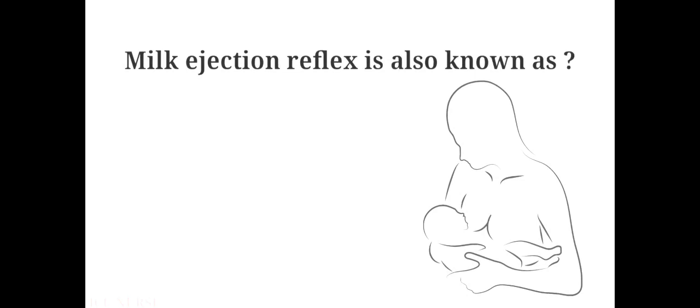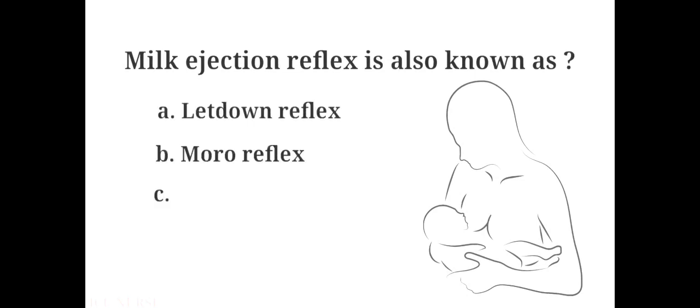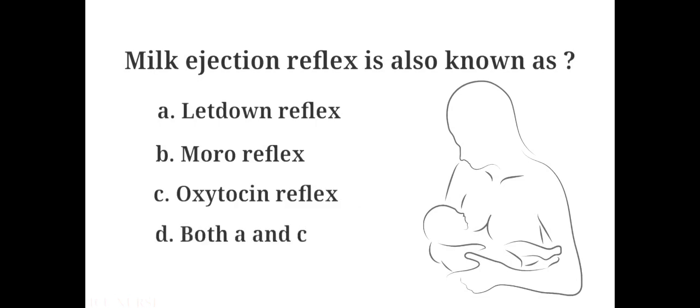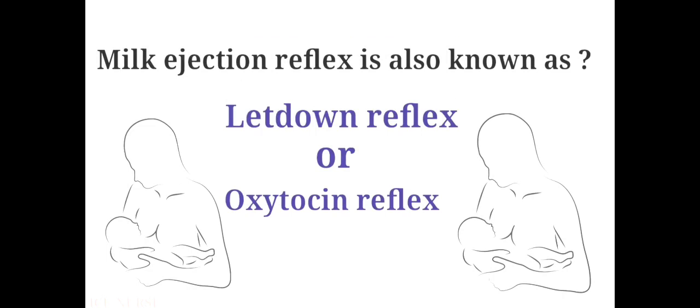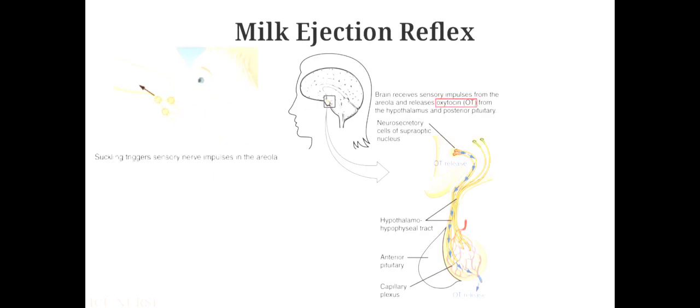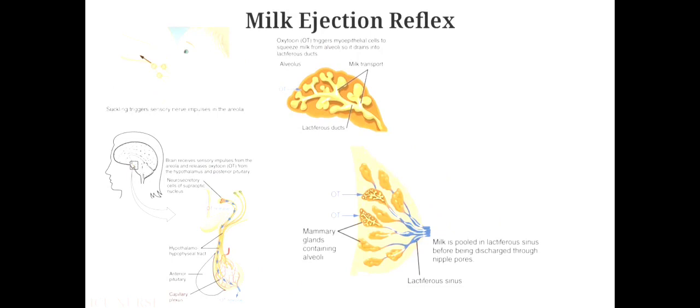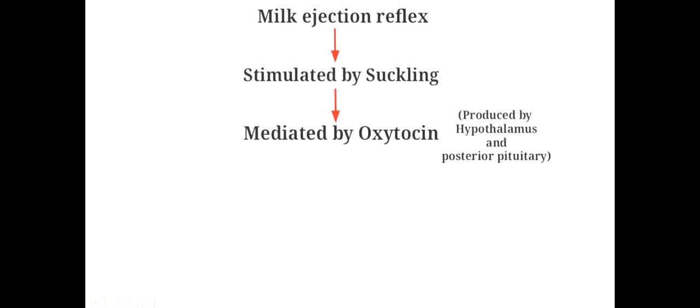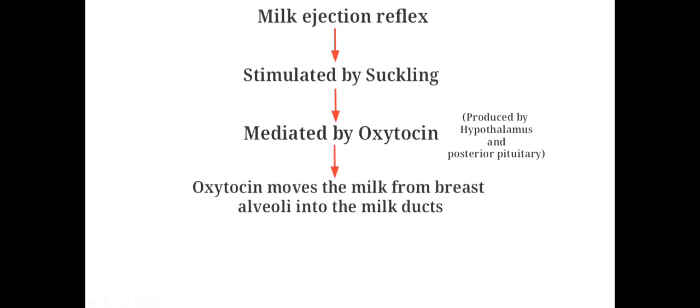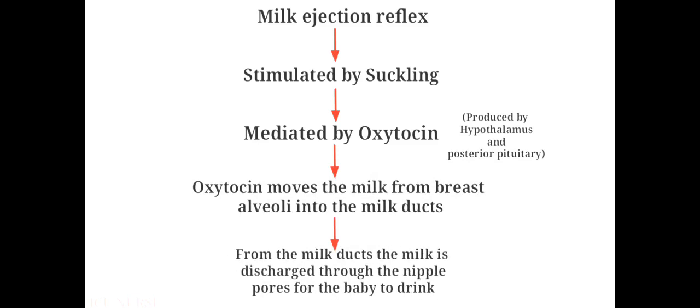Milk ejection reflex is also known as: A. Let down reflex, B. Moro reflex, C. Oxytocin reflex, D. Both A and C. The answer is D. Both A and C. Milk ejection reflex is also known as let down reflex or oxytocin reflex. It is a reflex stimulated by suckling of the baby and mediated by oxytocin, which moves milk from the breast alveoli into the milk ducts, from where it is discharged through the nipple pores.